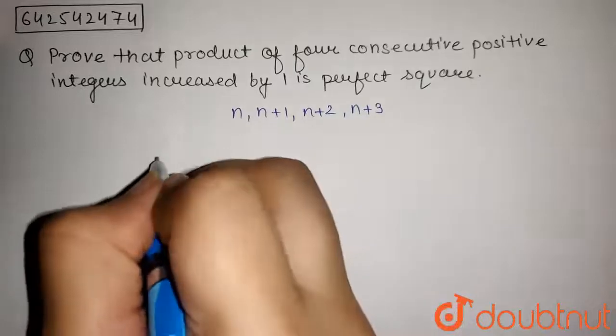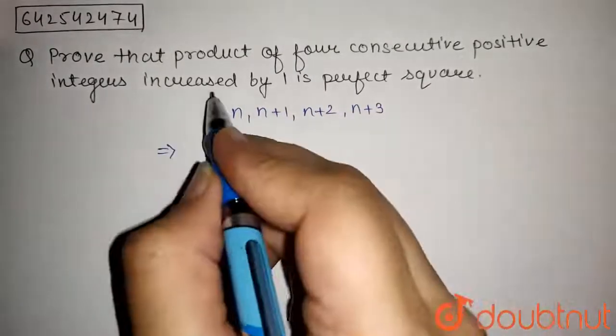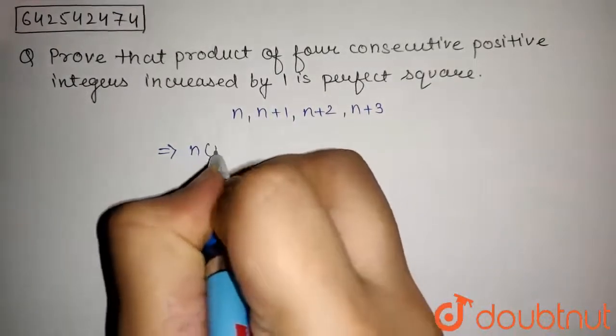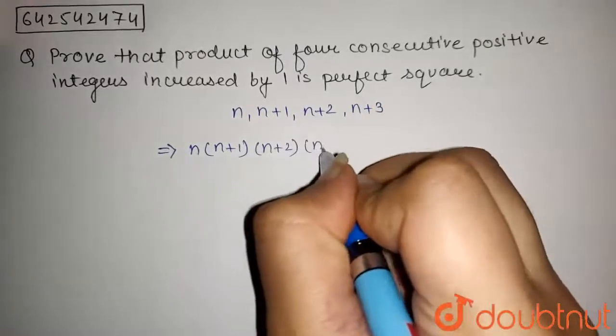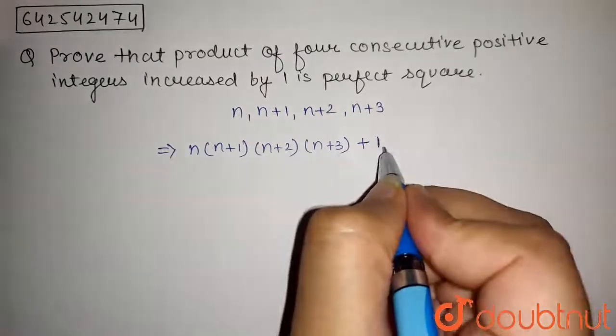Now, product of these four consecutive positive integers is increased by one. So, now this will be n into n plus 1, into n plus 2, into n plus 3, plus 1.